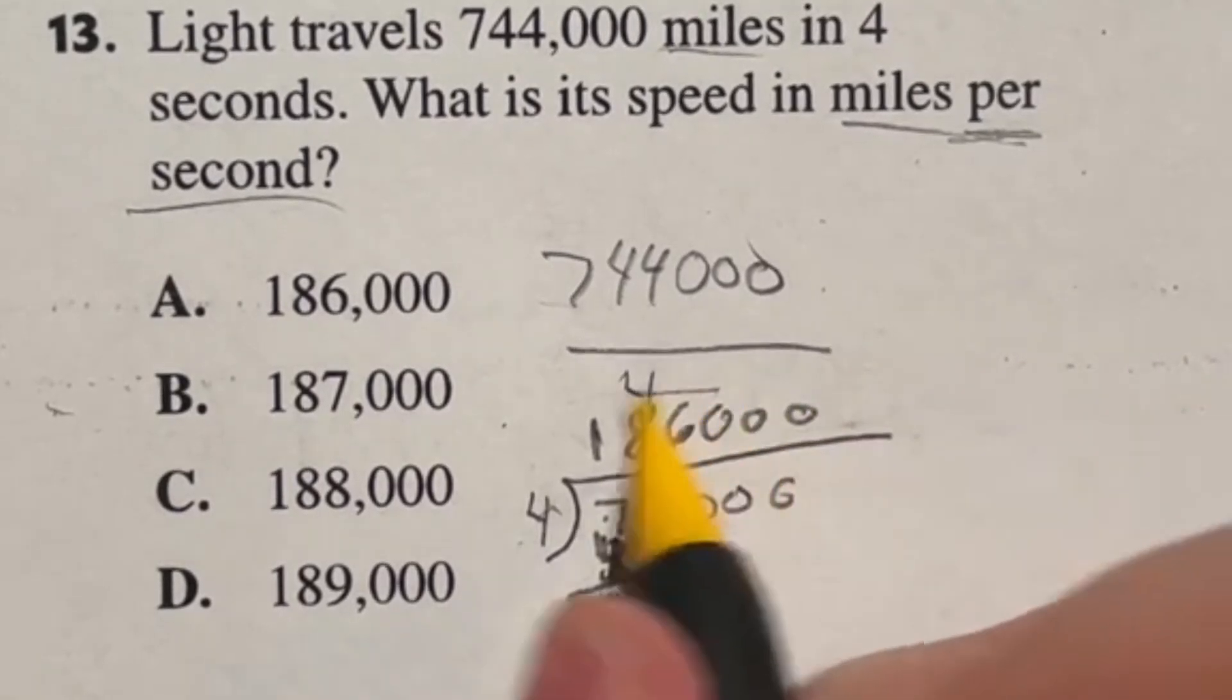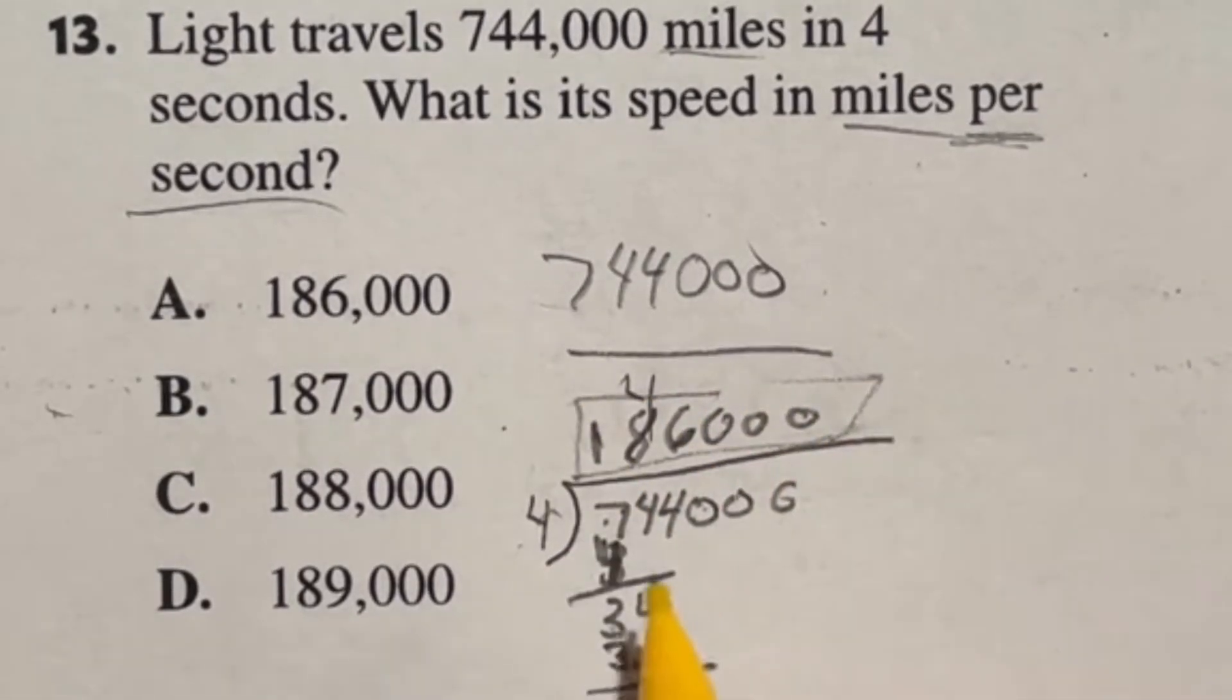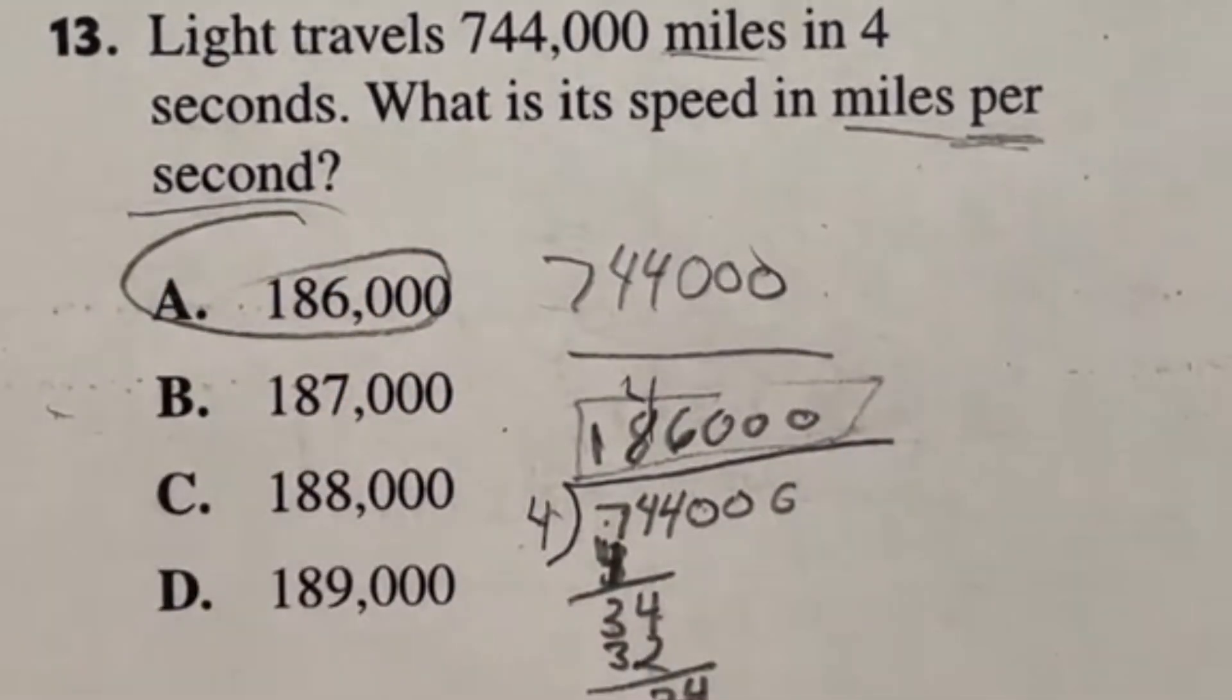So that means that we can just go into the zeros from here. So zero, zero, zero. So our final answer should be 186,000, which it looks like is answer A.